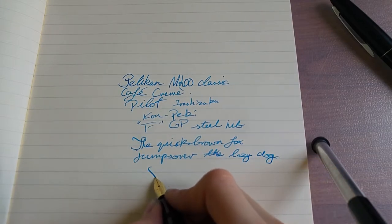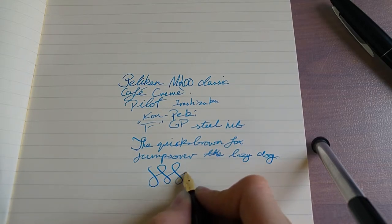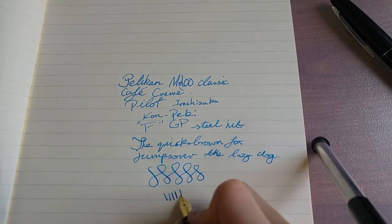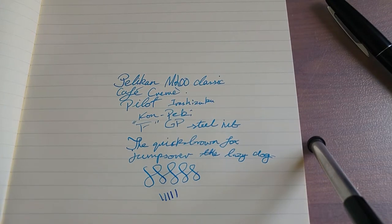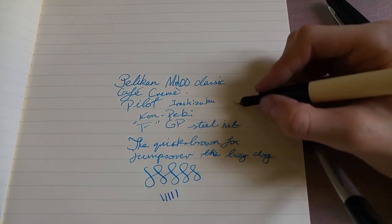The line variation - there is some line variation, which is awesome for a steel nib. And you can see there's some variation.